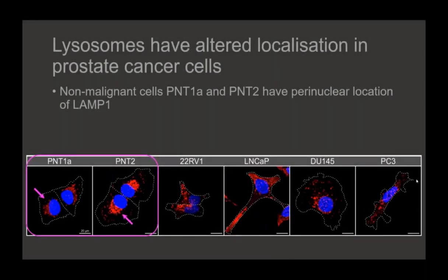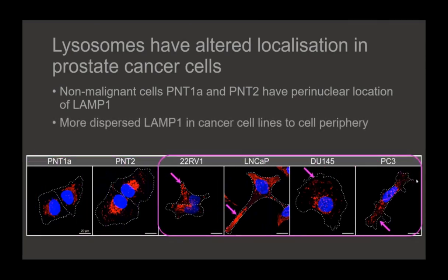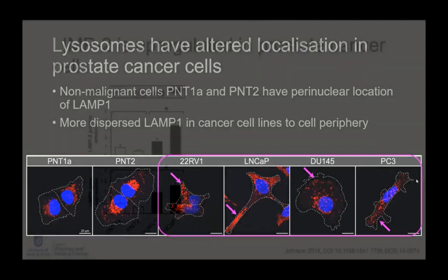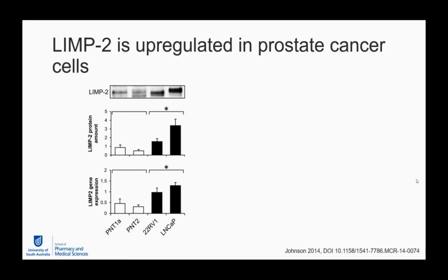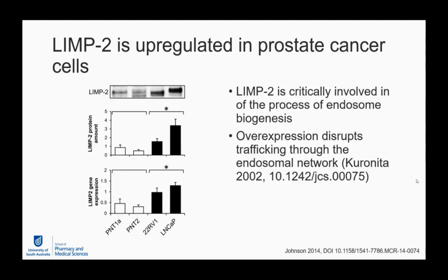By confocal fluorescence analysis, lysosomes show a change in distribution. In non-malignant cells PNT1A and PNT2, we get perinuclear localization of LAMP1, while in cancer cells, we see wide dispersal of pericellular LAMP1 out to the periphery. LIMP2 — a critical regulator of endosome biogenesis — was elevated two- to fourfold in gene and protein expression in some cancer cell lines. Since overexpression can disrupt trafficking through the endosomal system, we postulated that the biogenesis of endosomes, but not lysosomes, was fundamentally altered in prostate cancer.